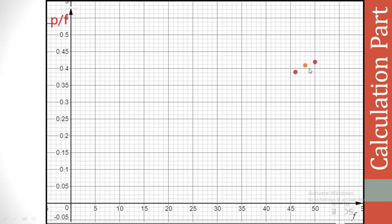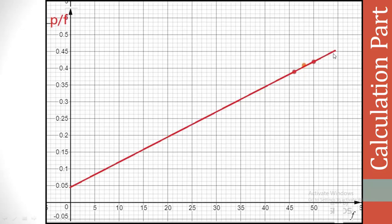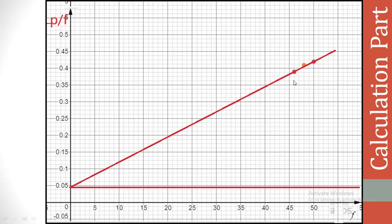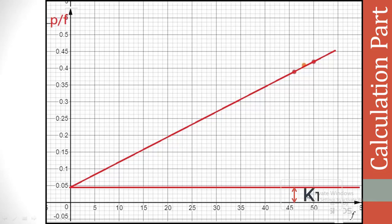Draw the straight line connecting a minimum of two points. From this line, draw a line parallel to the x-axis. Now draw a perpendicular line from any point — I am considering this point. From this point, I am drawing the line where this represents K2 × F. Similarly, this represents the value of K1.